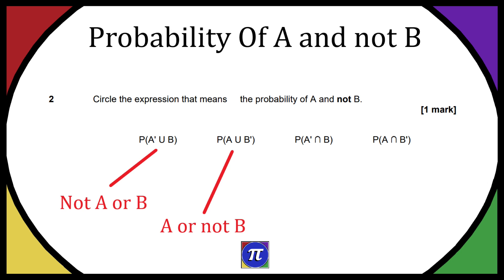Next up we have the probability of A or not B. That's because it's just the probability of A by itself. The U means or and the B dash means not B. So we have A or not B.